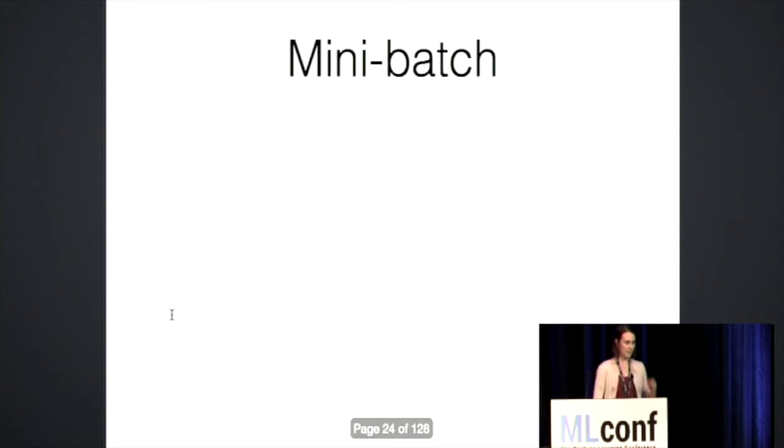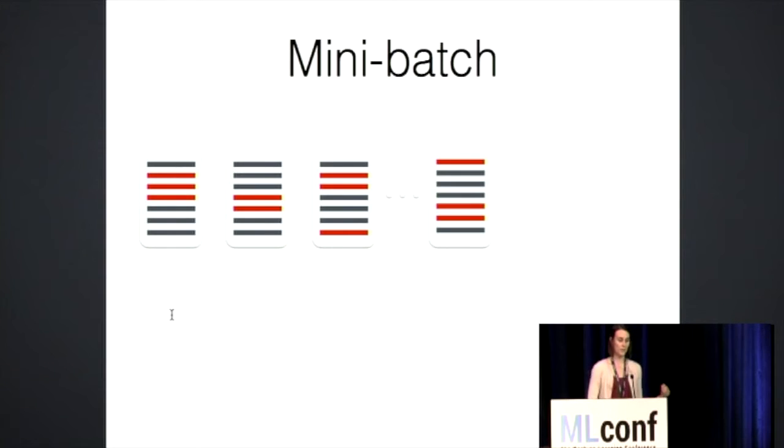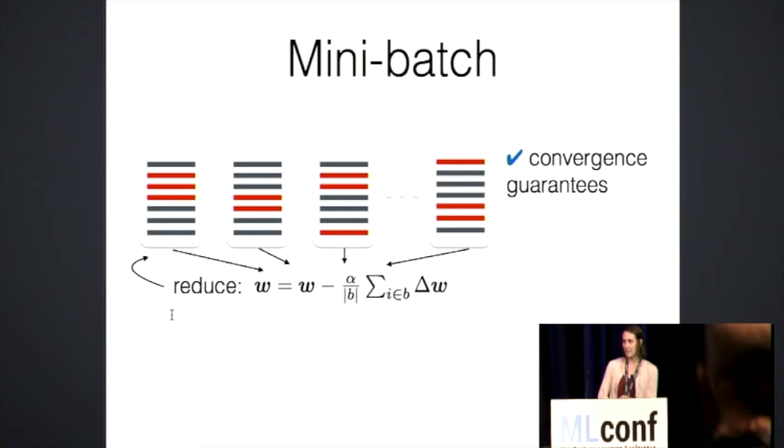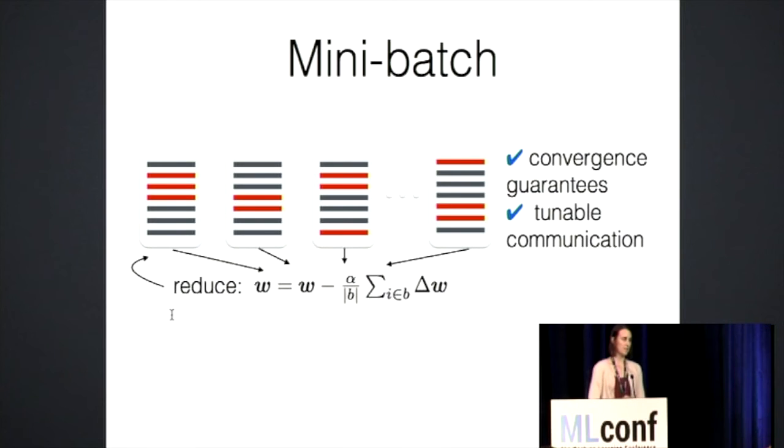So what else is there? Well very naturally you can imagine something kind of in the middle. Instead of processing all of your data points or just one data point, you process a few data points on each machine in parallel before you communicate back to the master and iterate doing this over and over again. So this is what is known as mini batch style methods. It's nice because we have convergence guarantees about these style of methods and the communication is also tunable. So what I mean by that is you can choose how large to make your mini batch size, how many updates you want to process on each of the machines in parallel, to tune communication in whatever sort of systems environment you're in. So this is really a nice natural middle ground and it's used a lot in practice.